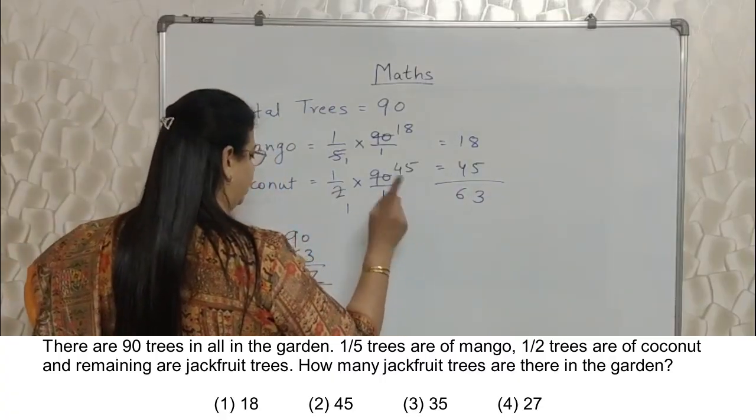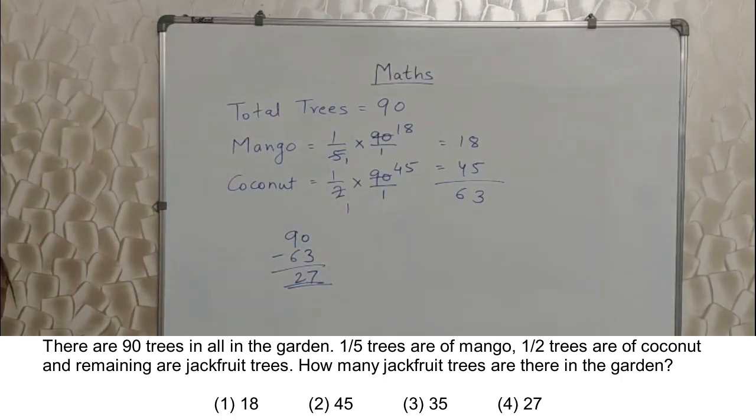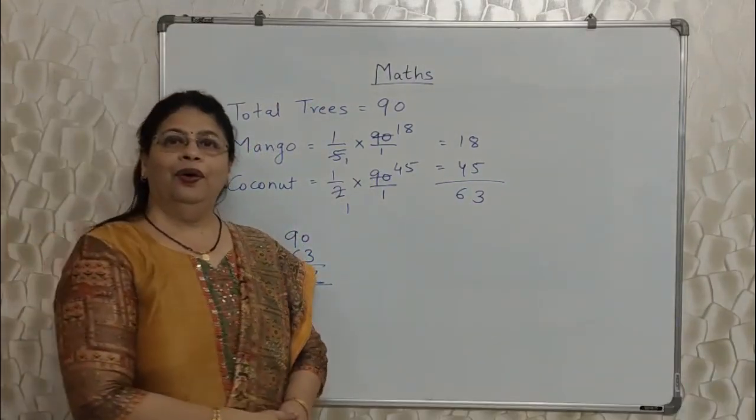So this is the fastest way. 27 is the answer. Okay students, we will stop here in this video.